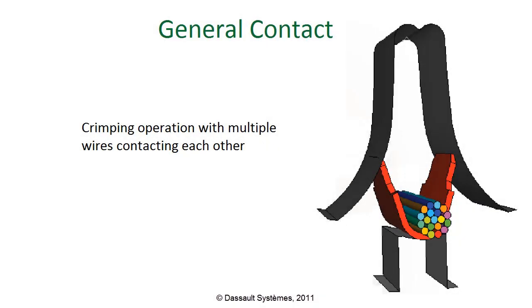Consider the use of a crimp tool on a bunch of wires. If you wanted to simulate these wires coming in contact with each other, you'd need to create a contact pair for each potential contact condition. Since each wire might come in contact with a number of others, you would need to define a large number of possible contact pairs. In such a scenario, the general contact method would save you a lot of effort.